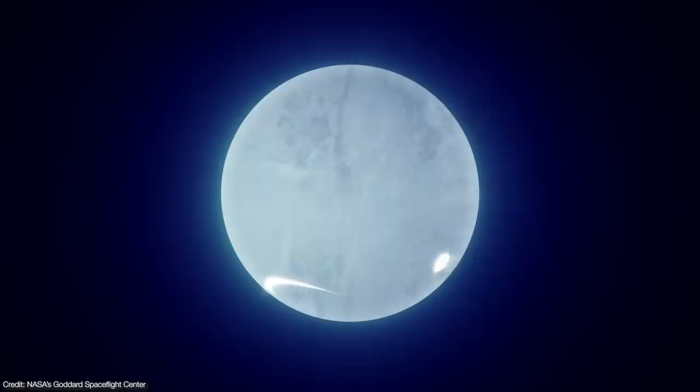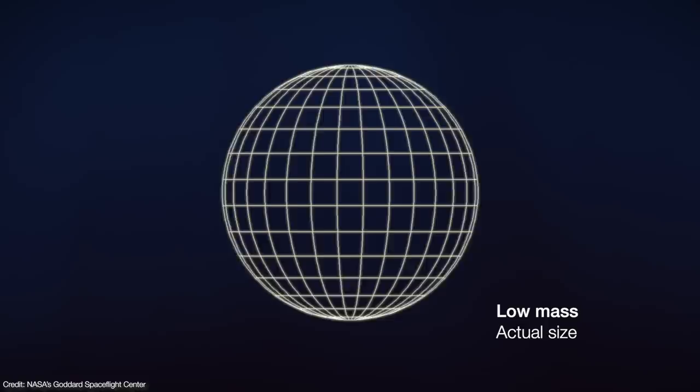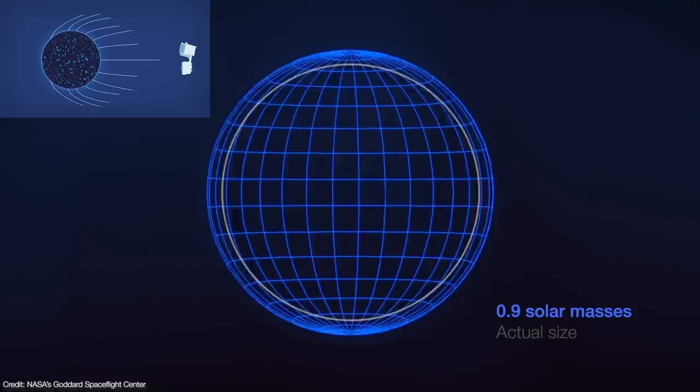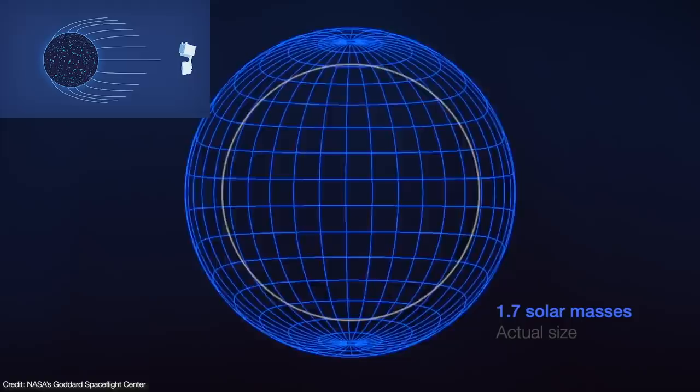To see what I mean, imagine a pulsar about 8 miles in radius, but with far less mass. We'd see the object at its actual size, and only the light coming from the near side of the pulsar. But if we let the mass increase, the pulsar's gravity warps spacetime and bends light from the far side toward us. The more massive the pulsar gets, the more it warps spacetime, and the more of the far side we can see.